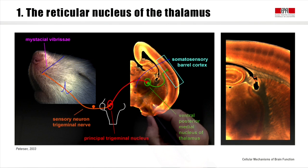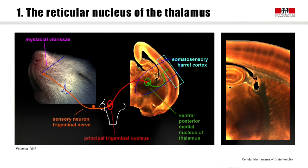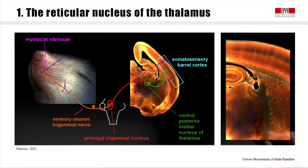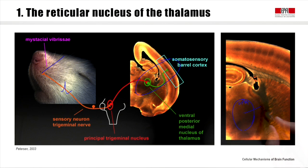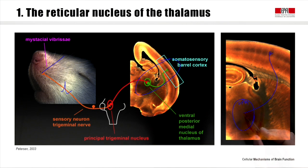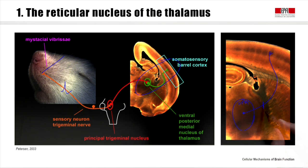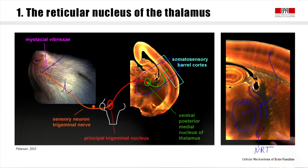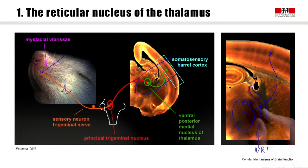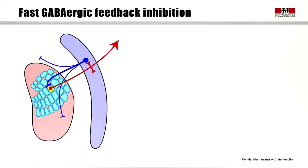If we zoom in on this area in closer detail, we see the thalamic nucleus — the ventroposterior medial nucleus of the thalamus — that sends axons up to innervate individual layer 4 barrels. On their way, these thalamic neurons send off collaterals. The axon branches in a specific region called the nucleus reticularis — a new area full of GABAergic neurons, and these GABAergic neurons cause a feedback inhibition upon the thalamus.